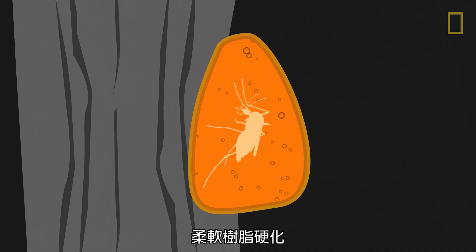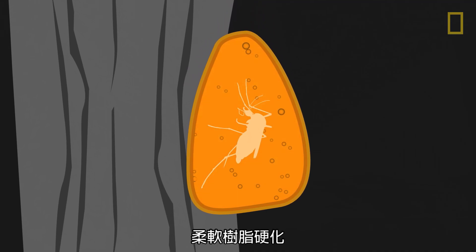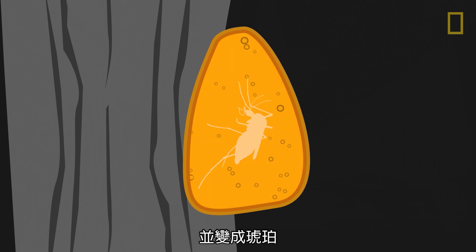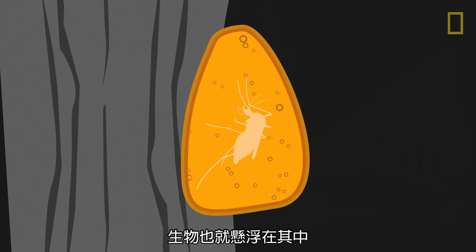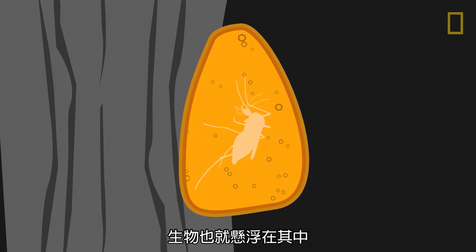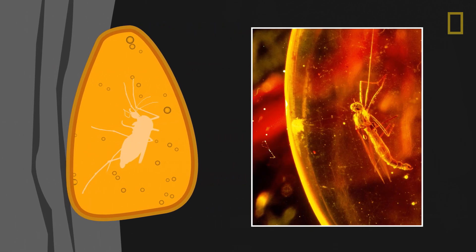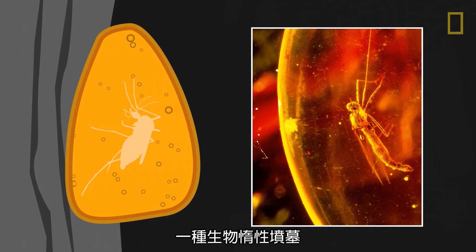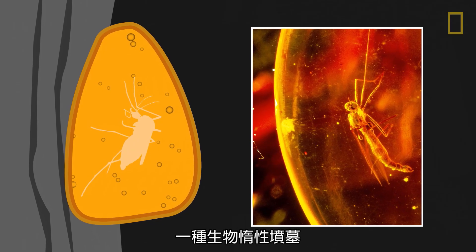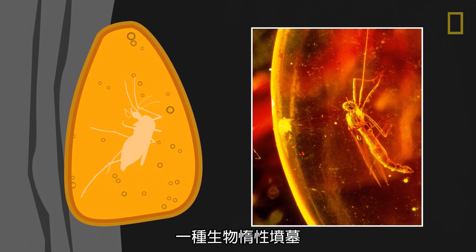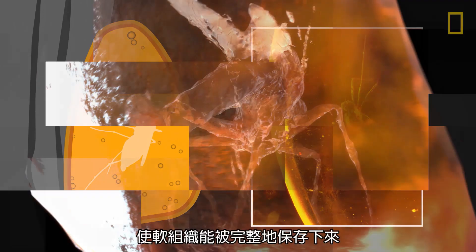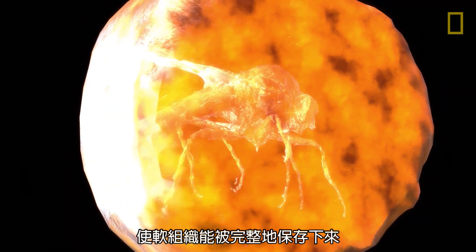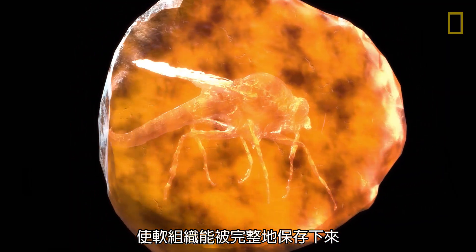Over time, the soft resin hardens and turns into amber, with the organism suspended within. This process creates a biologically inert tomb for the organism, allowing its soft tissues to be remarkably preserved.